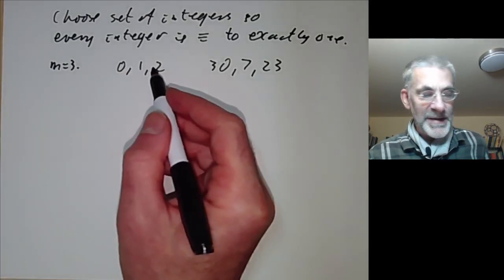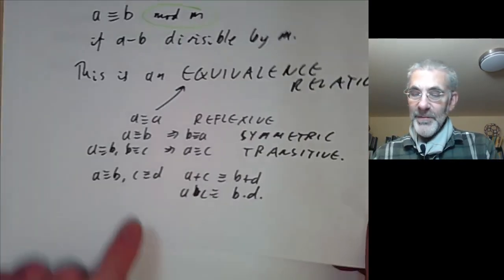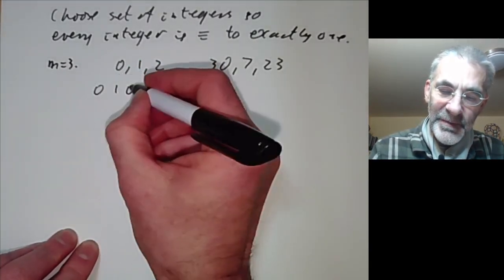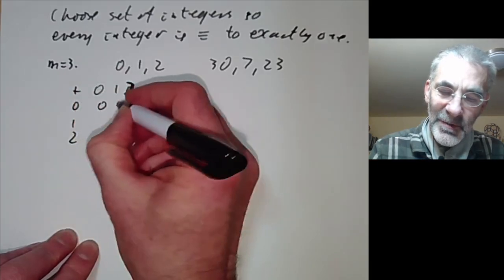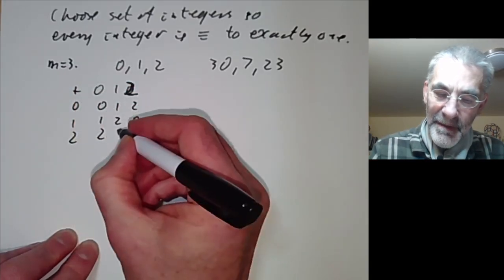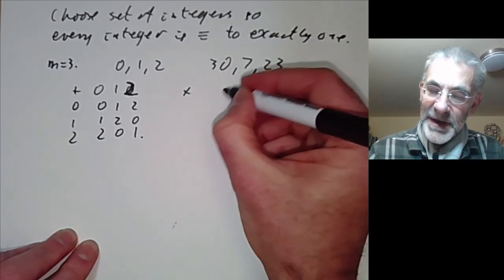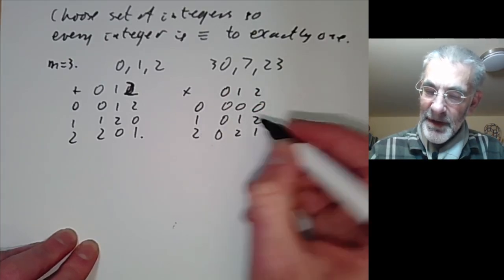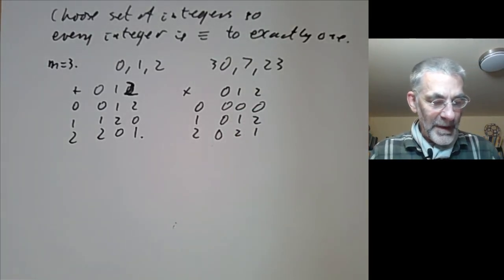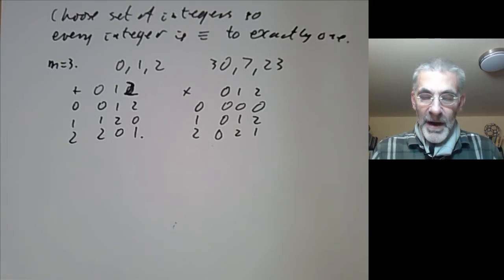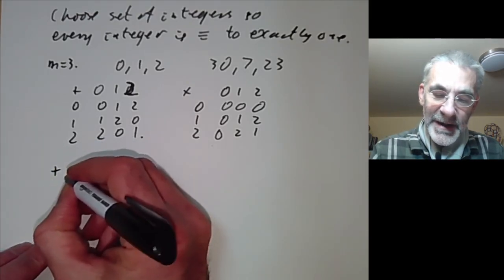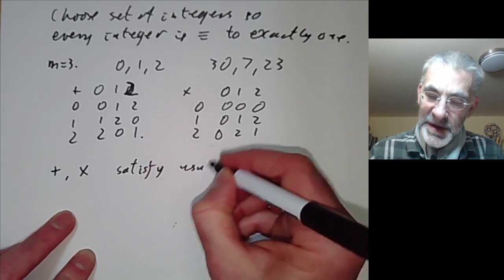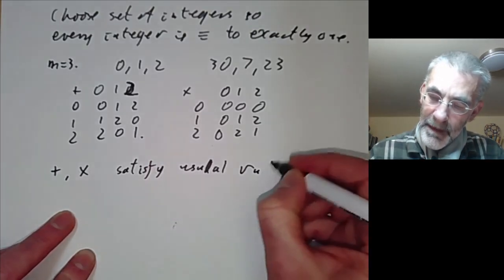We can do addition and multiplication on these representatives, and this is well defined because of the properties we checked. You can write down an addition table: 0, 1, 2 plus 0, 1, 2 gives 0, 1, 2, 1, 2, 0, 2, 0, 1. Multiplication looks similar: zero times anything is zero, one times anything is anything, and two times two is one modulo 3. So addition and multiplication on the integers mod m satisfy the usual rules of arithmetic.